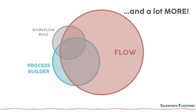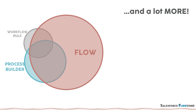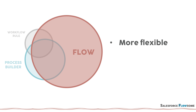For example, we can schedule a Flow or fire a Flow on deletion. In general, Flow is a lot more flexible because it allows you to work with objects that don't necessarily have a direct relationship. It is also quicker to build than Process Builder.